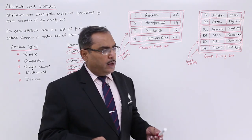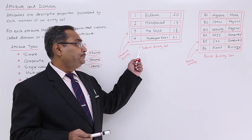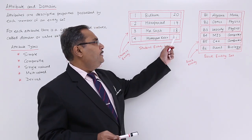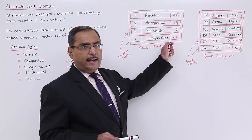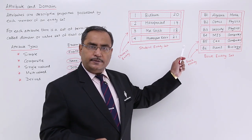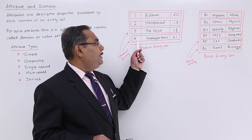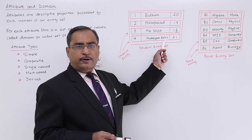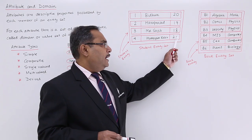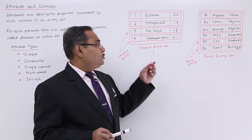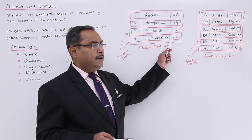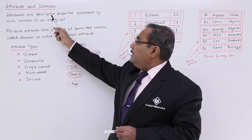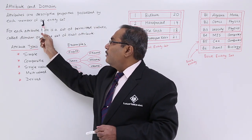In the previous video, we gave the example of one entity set for students. So there is one student entity, and another student entity — they are alike, forming one student entity set. This student entity has the value 4 against the attribute roll number, Humayun Kobir against the attribute student name, and 21 against the attribute age. So here we have three attributes: roll, name, and age. Attributes are descriptive properties possessed by each member of an entity set.